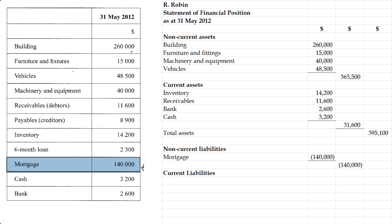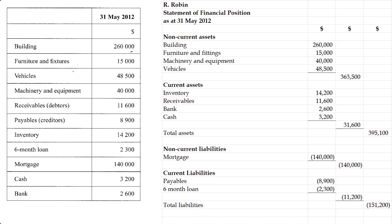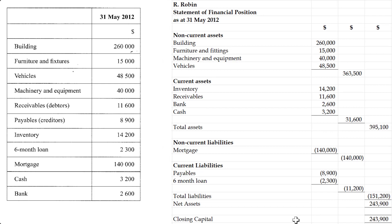For current liabilities, we had a couple of these: payables or creditors, and also a six-month loan. It's a loan for six months, which is less than one year, and any liability due within less than one year is considered a current liability. So we're going to put those items here, have a subtotal for current liabilities, and then a subtotal for total liabilities. We then take the $395,100 total assets and subtract total liabilities to give us net assets. And net assets are financed by our capital balance, so the closing capital is $243,900.